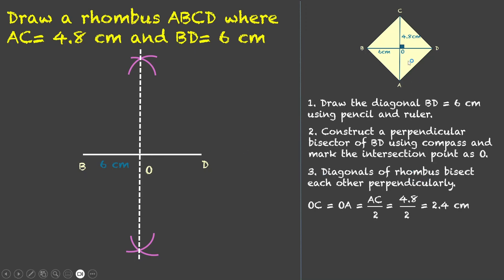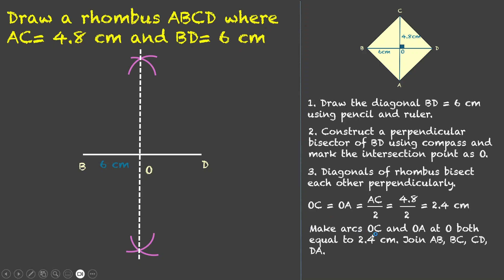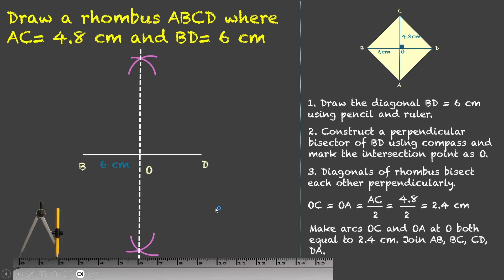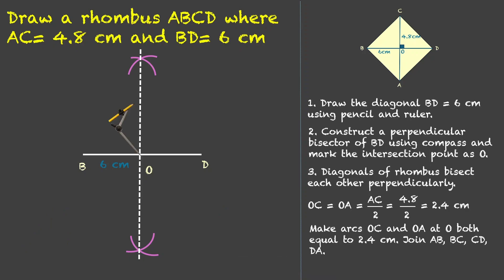We know that the diagonals of a rhombus bisect each other perpendicularly, so the diagonal AC will be a part of this perpendicular bisector line. Since OC = OA, that means each is half of AC. AC is 4.8, so half of that is 2.4 centimeters. We keep our compass at O, open it to 2.4 centimeters, and make two arcs — one arc gives us point C, and the other arc gives us point A.